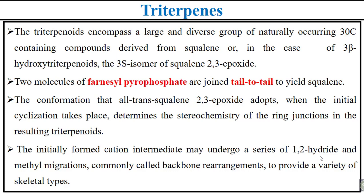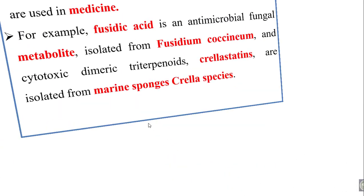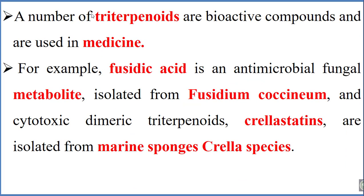The initially formed cation intermediates may undergo a series of 1,2-hydride and methyl migrations — this is called backbone rearrangement — to provide a variety of skeletal types. A number of triterpenoids are bioactive compounds and are used in medicine as pharmaceutical drugs.